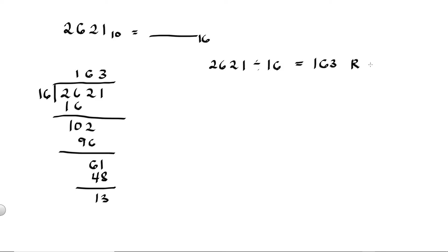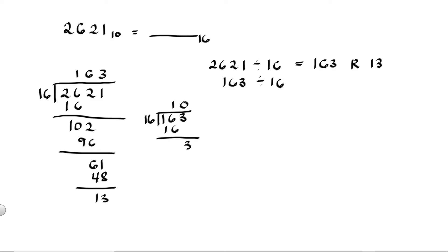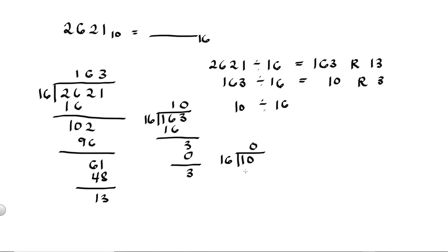So the answer is 163 remainder 13. Then we take 163 and divide it by 16 using long division. 16 divided by 16 is 1. 1 multiplied by 16 is 16. 16 minus 16 is 0. Bring down 3. 3 divided by 16 is 0. 0 multiplied by 16 is 0. 3 minus 0 is 3. So the answer is 10 remainder 3. Then we take 10 and divide it by 16. 10 divided by 16 is 0. 0 times 16 is 0. 10 minus 0 is 10. So the answer is 0 remainder 10.